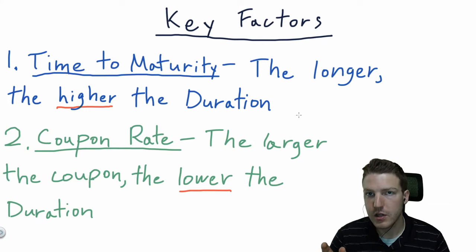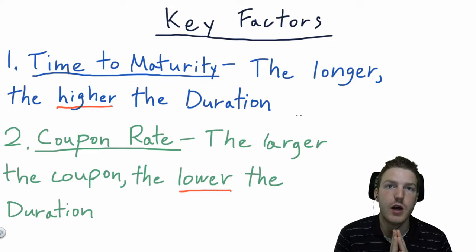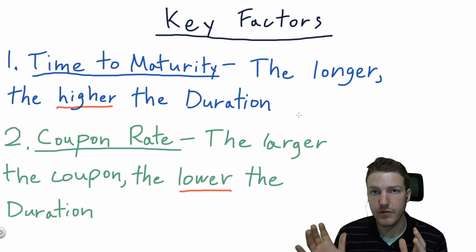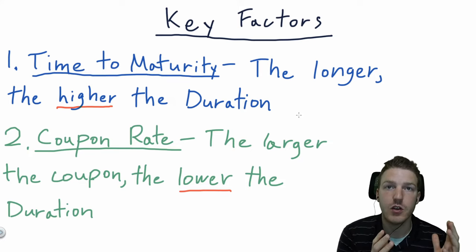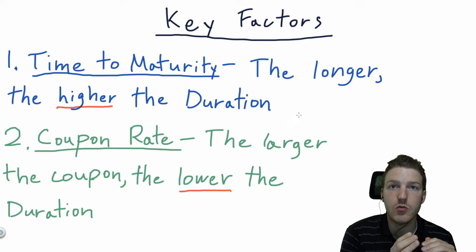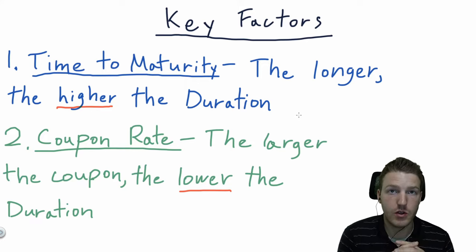Think about it like this. If the bond has a high coupon rate, that means every year you're getting a high amount of money paid to you on that bond. So you're getting your investment returned sooner if the coupon rate is higher. And the sooner you get your money returned to you, the less concerned you are, the less sensitive your asset is to duration.